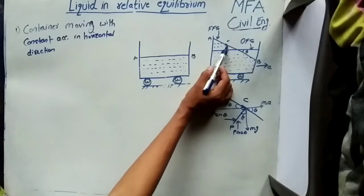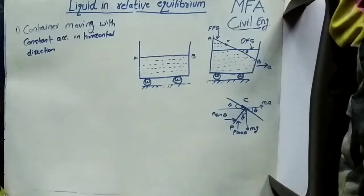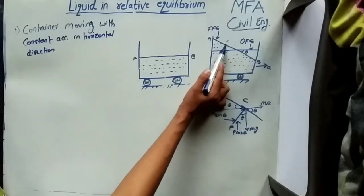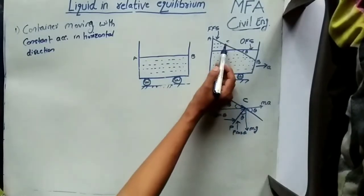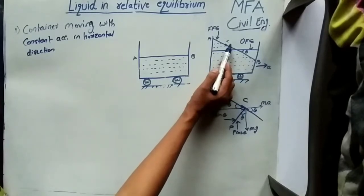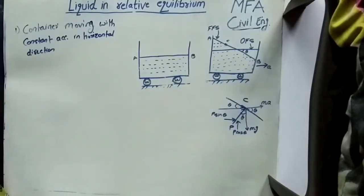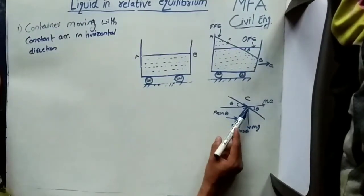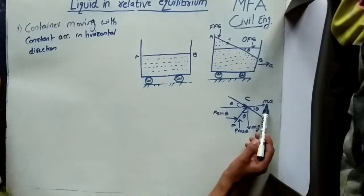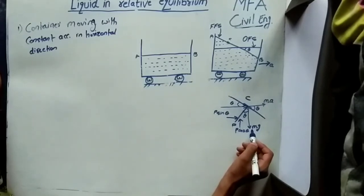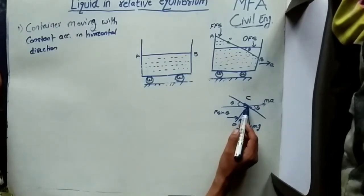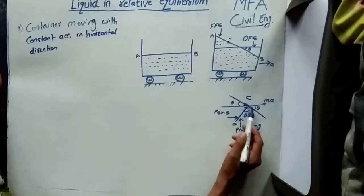The free surface equation can be determined by considering the forces acting on the free surface of the liquid. Consider a small element on the free surface. There are three forces acting on this element: first, the pressure force exerted by the surrounding molecules acting normal to the element; second, the weight of the element acting vertically downward; and third, the acceleration force acting on this fluid element. For equilibrium, all forces acting in the horizontal as well as vertical direction should be equal to zero.